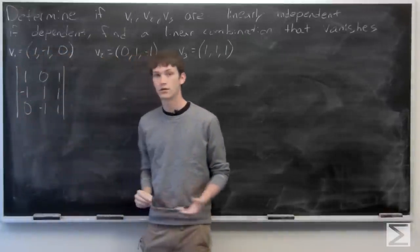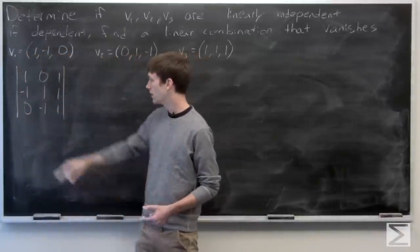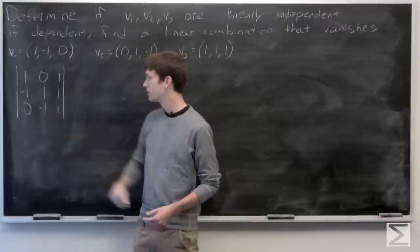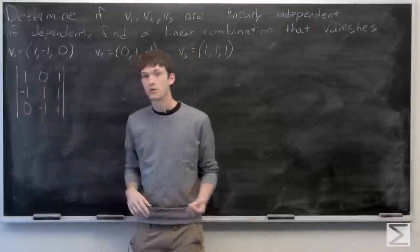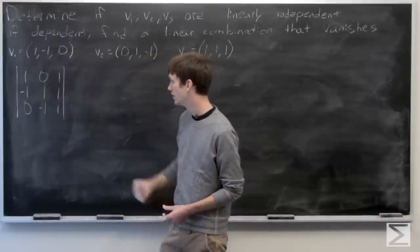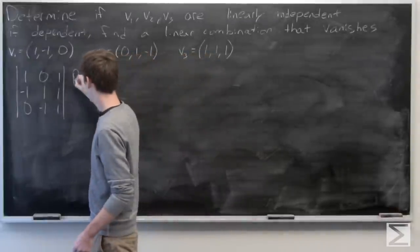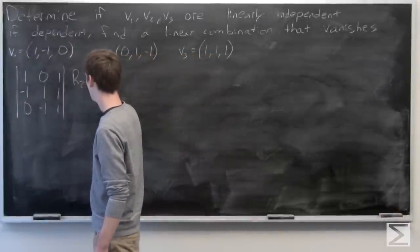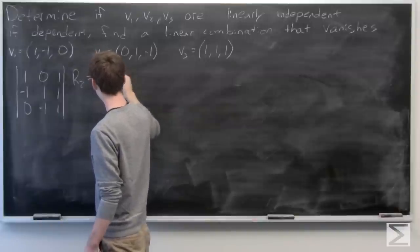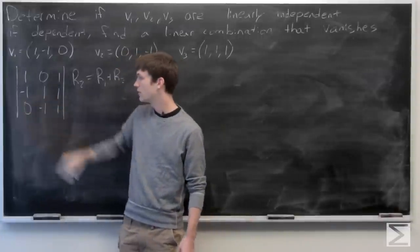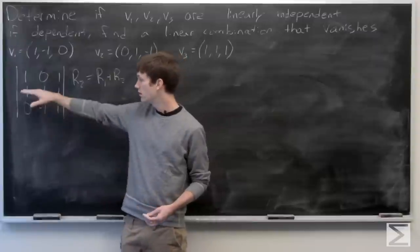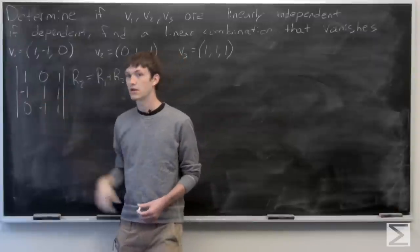And we want to calculate the determinant. So we can use our properties of determinants, which tells us that the determinant remains unchanged if we set row 2 equal to row 1 plus row 2. And that will give us a 0 in the first column, second row.